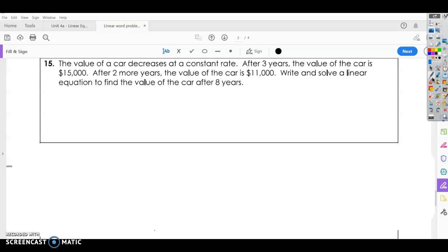Alright, this one says the value of a car decreases at a constant rate. That right there tells us it's a linear equation. After three years, the value of a car is $15,000. Years is our independent number. The price depends on the number of years you've had it. Alright, after two more years, two more after three would be five years. The value of the car is $11,000.